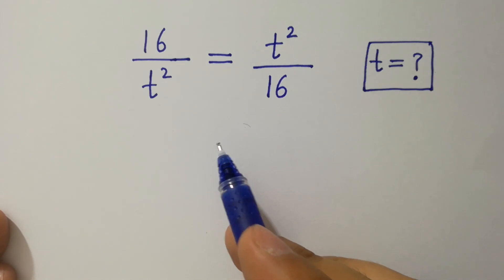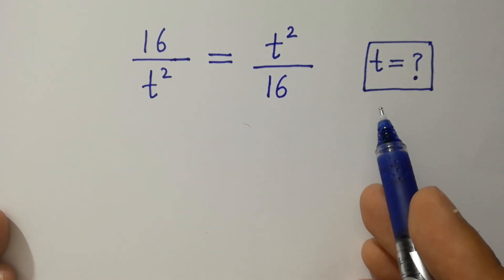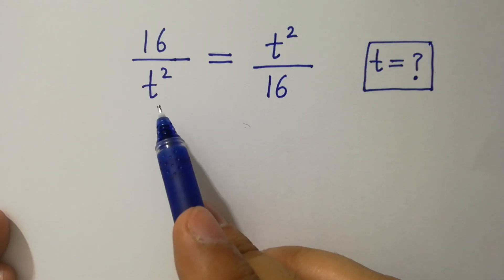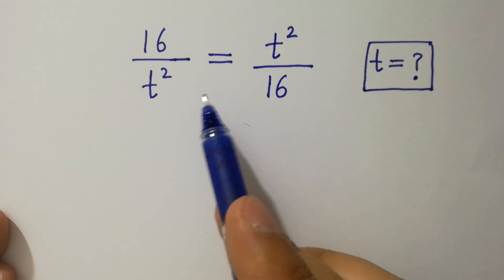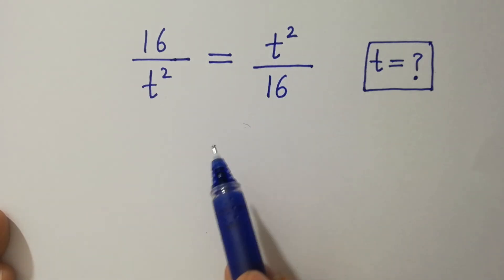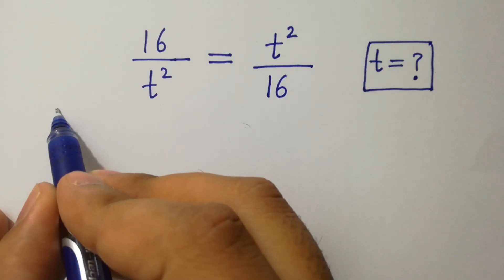Hello friends. Find the value of t if 16 over t square equals t square over 16. Let's have a solution.